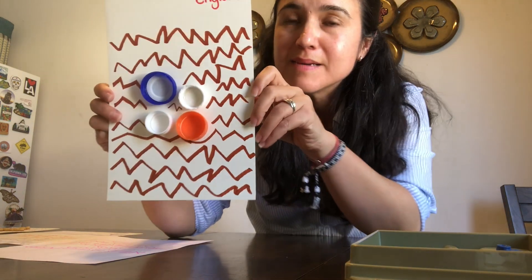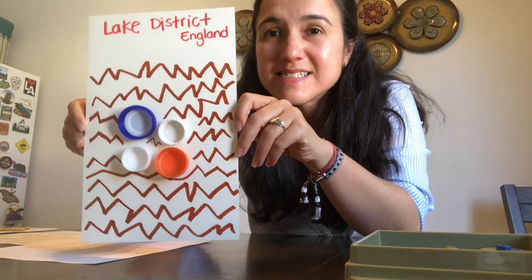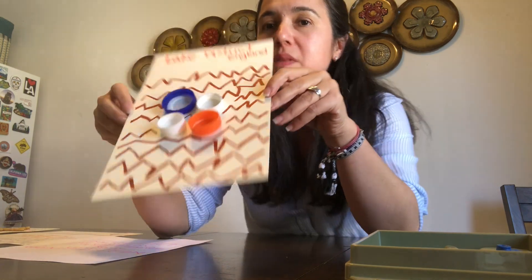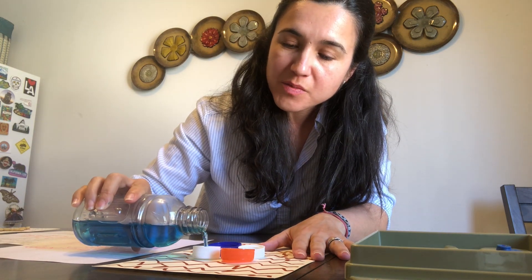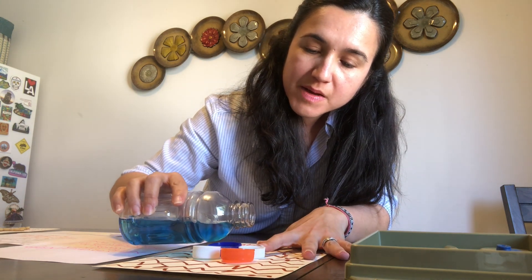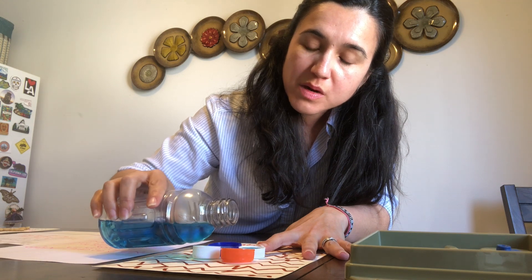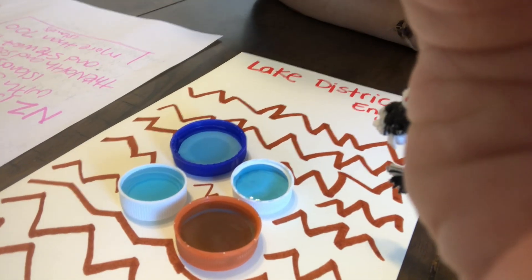And I'm going to show you how I made my system of lakes. This system of lakes is the Lake District — it's in England. I'm going to pour water on each of my lids, inside the lid, to make my system of lakes — my group of lakes near one another. And if I put it up — ta-da! Wow, it looks amazing!